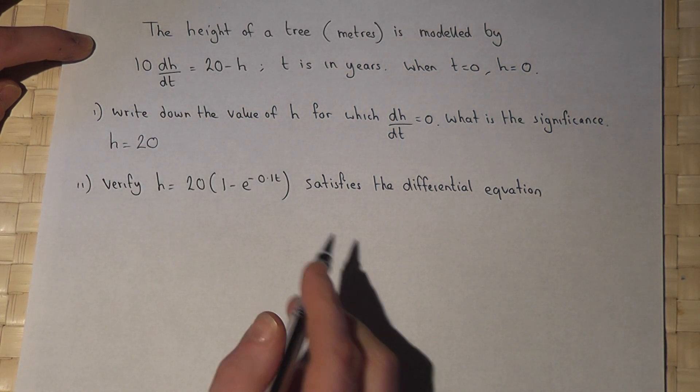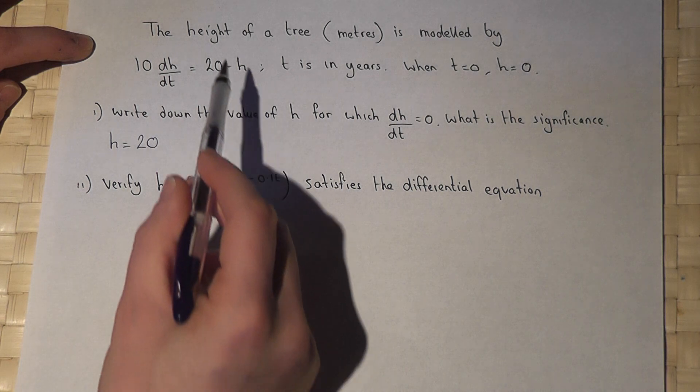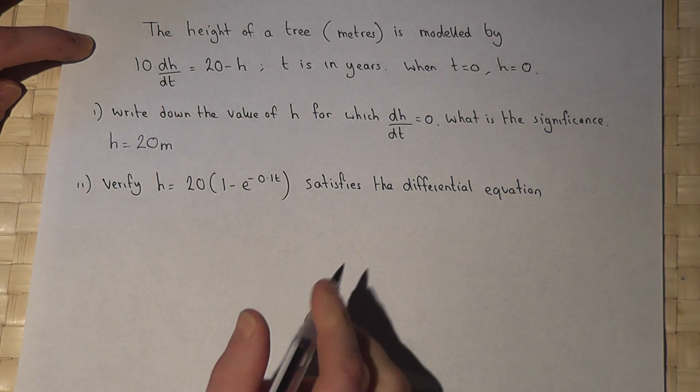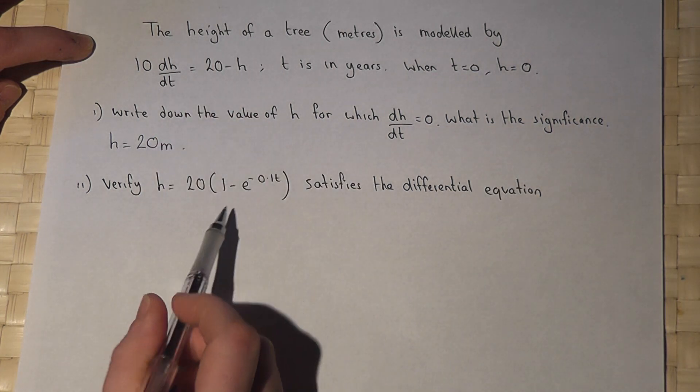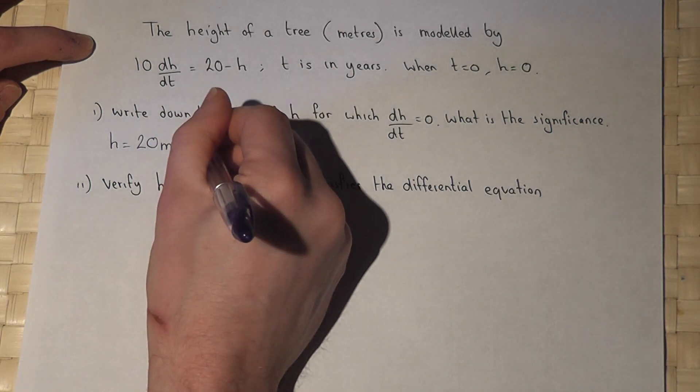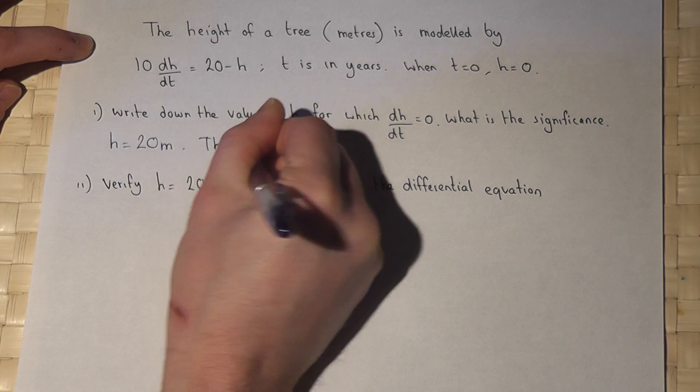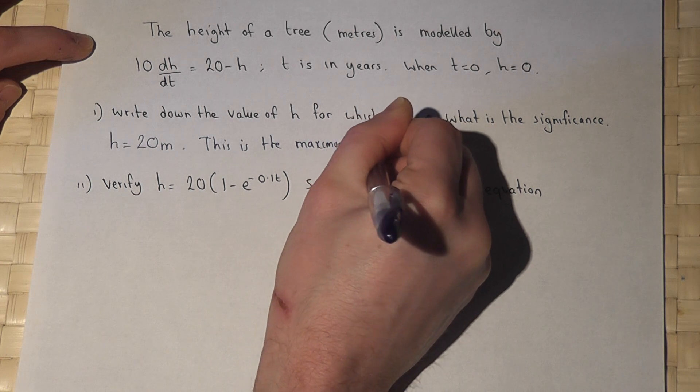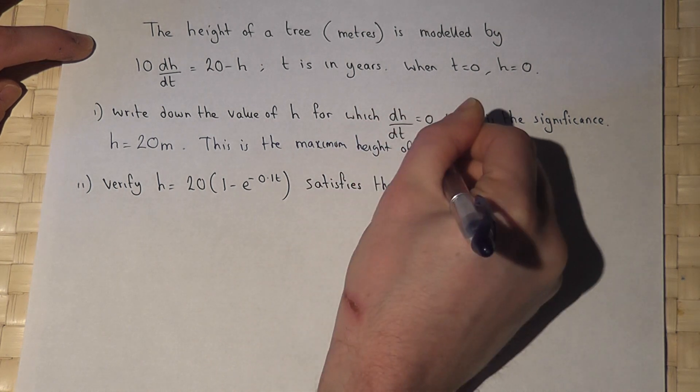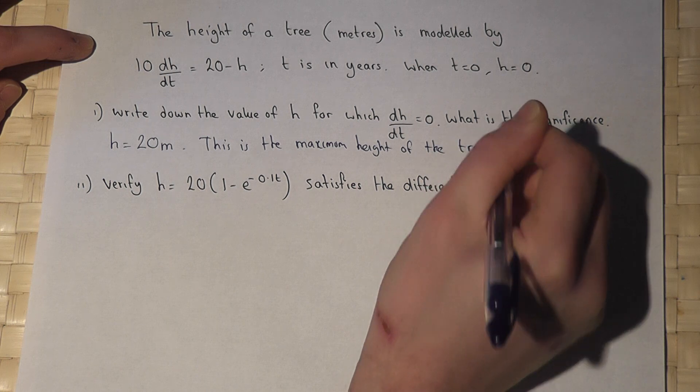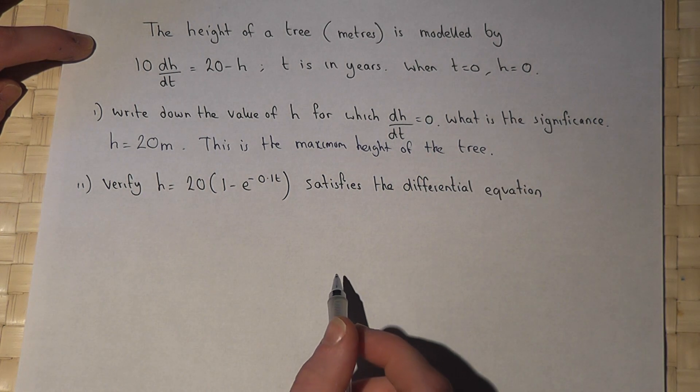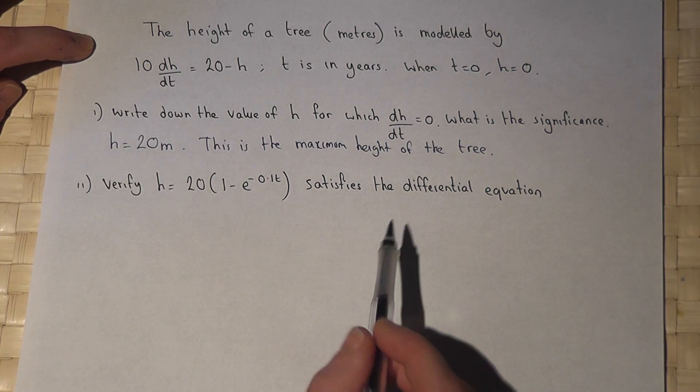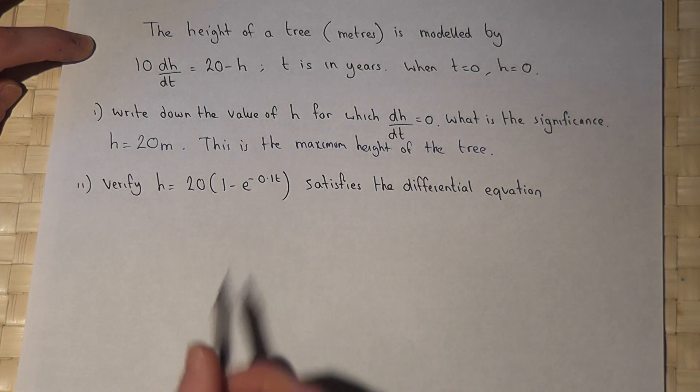So when h equals 20 then dh by dt equals zero. Now the significance is that this is the max height of the tree. Once the tree reaches this height then it stops growing so h no longer changes. So 20 meters is the max height of this tree.